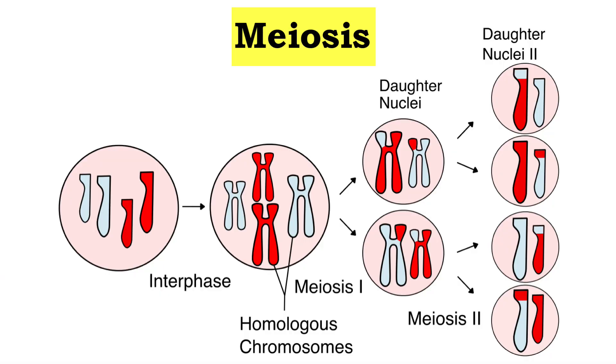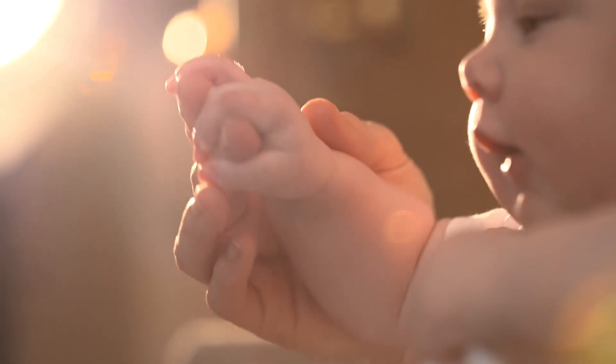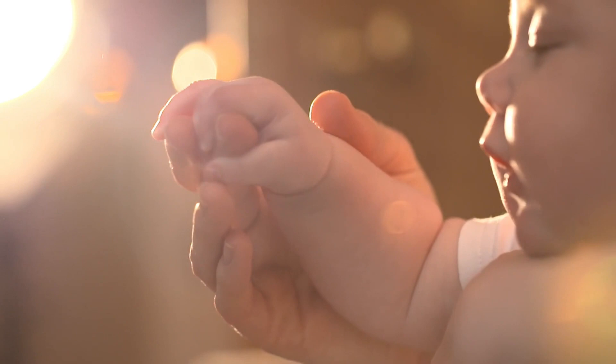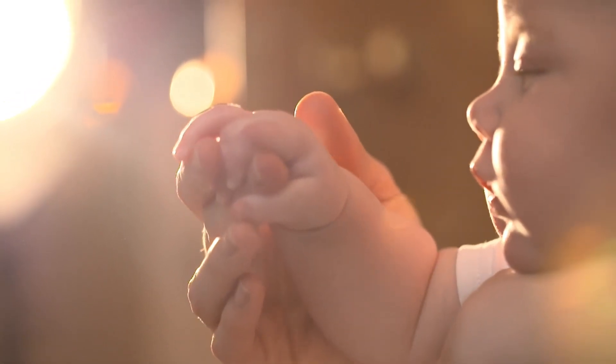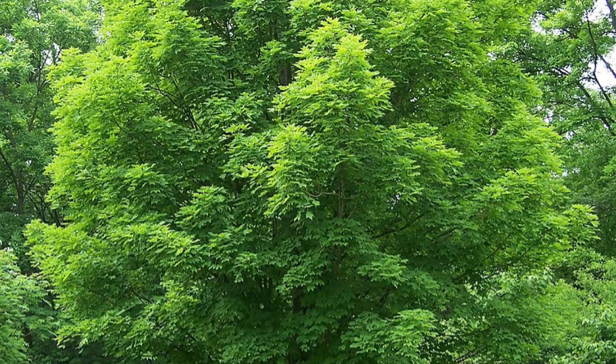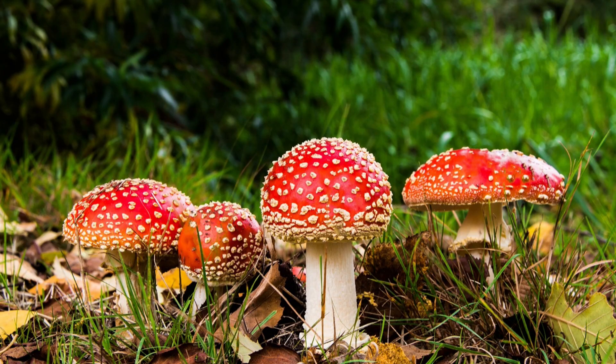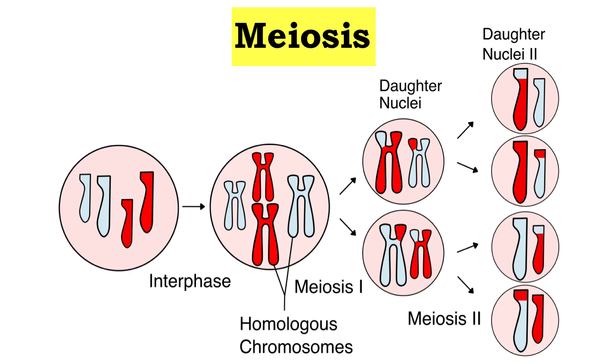Now let's look at meiosis. Meiosis is also cell division, but it's slightly different, mainly in its purpose. The purpose of meiosis is for reproduction — more specifically, to create sex cells that combine to create another organism. Because of this purpose, meiosis only occurs in animals, plants, and fungi.